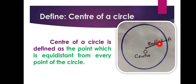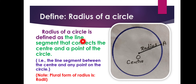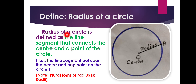What about radius? The radius of a circle is defined as the line segment. Remember, center is a point and radius is a line segment. So, the radius of a circle is the line segment that connects the center and any point on the circle — that is called radius.